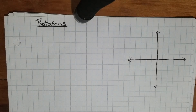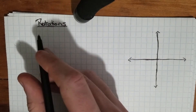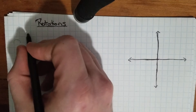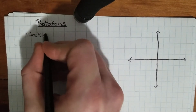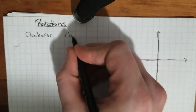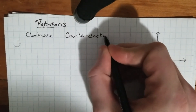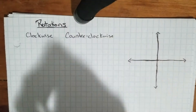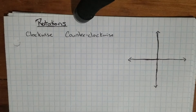Before we talk about rotations, we're going to talk about the different types of rotations that we can have. Usually when we think about rotations, we talk about them as either being clockwise or counterclockwise. Sometimes the textbook also uses the term anticlockwise, which means the same thing as counterclockwise.